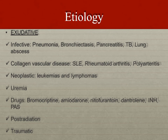Causes of exudative pleural fluid include infective causes such as pneumonia, bronchiectasis, pancreatitis, tuberculosis, and lung abscesses. Collagen vascular diseases such as systemic lupus erythematosus and rheumatoid arthritis are also causes. Neoplastic causes include leukemia and lymphoma. Other causes are uremia, medications such as bromocriptine, amiodarone, and nitrofurantoin, post-radiation pleural fluid, and traumatic causes.